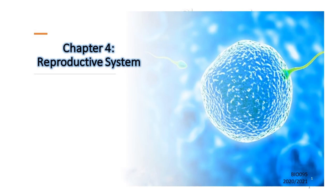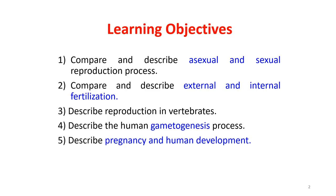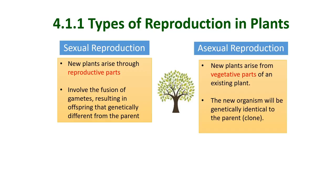Welcome to a new chapter on the reproductive system. There are five learning objectives: first, compare and describe asexual and sexual reproduction; second, compare and describe external and internal fertilization; third, describe reproduction in invertebrates; fourth, describe the human gametogenesis process; and fifth, describe pregnancy and human development.